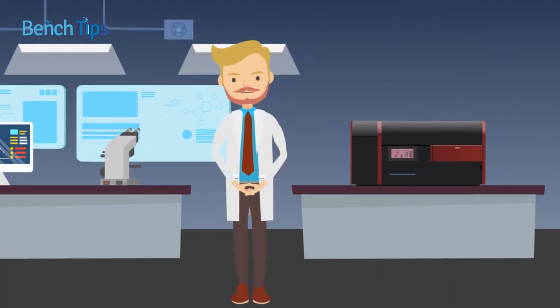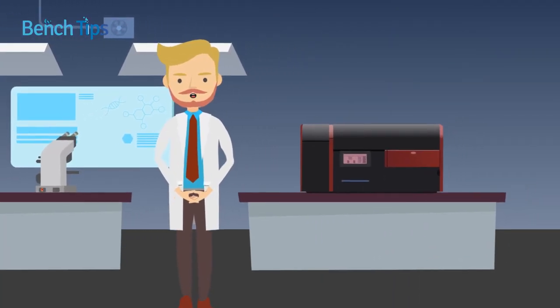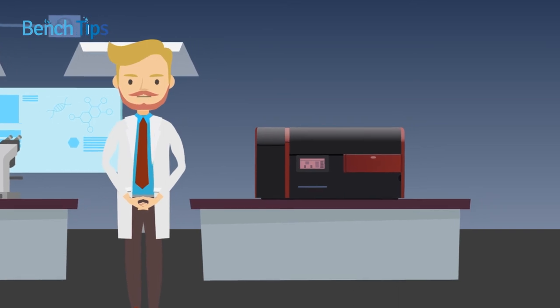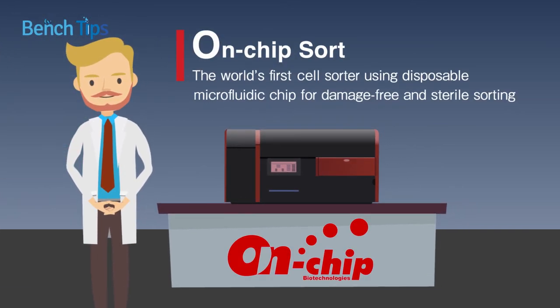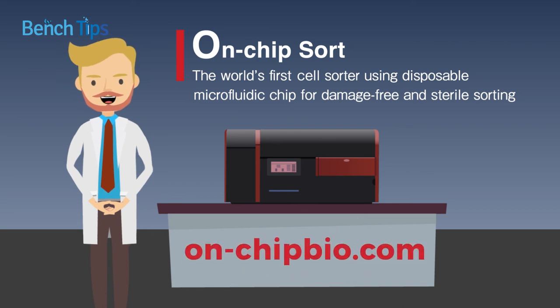Flow shift cell sorting reduces SIX for better quality cells that suit a broader range of research applications. Why not give it a try with the on-chip sort? To learn more, visit onchipbio.com